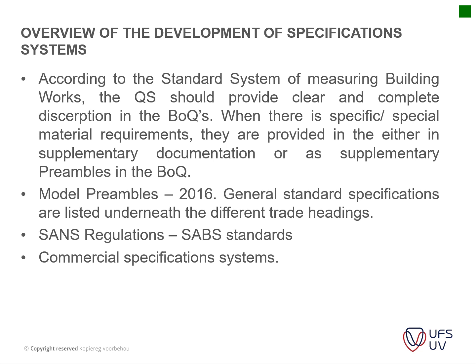In South Africa, we have the Standard System of Measurement for Building Works, which specifies that the QS should provide clear descriptions in the BOQ. When specific special materials are required, they are provided in supplementary documentation, supplementary preambles, or in the description of the actual bill of quantities - the main thing is the contractor shouldn't be able to say they didn't know how to price an item. The model preambles - the book still refers to the 2008 one and the 2015 architectural one.